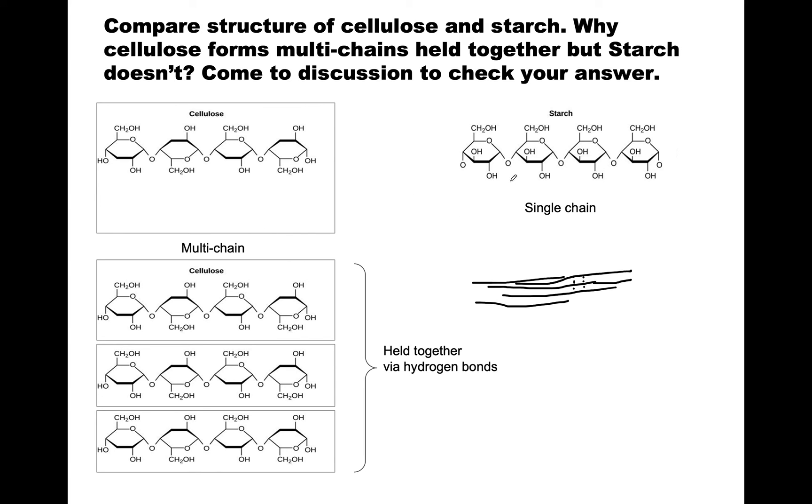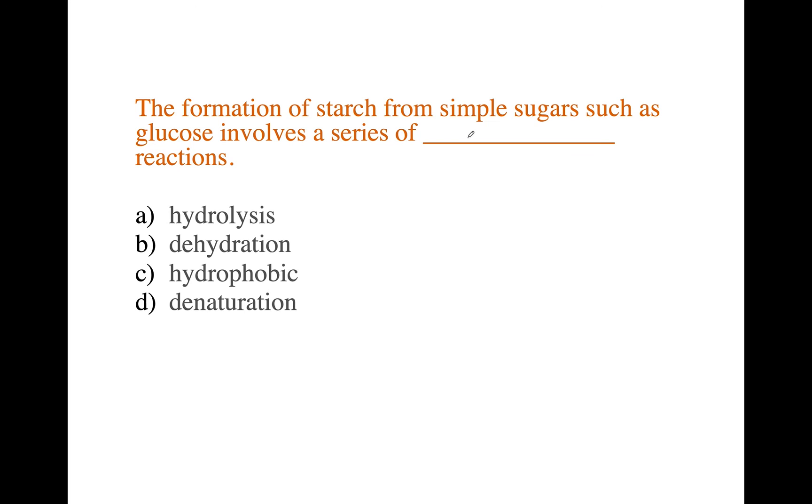So I would like you to compare the structures of cellulose and starch. Other than the fact that cellulose is a multi-chain, what is it about these two polysaccharides that makes one able to make lots of hydrogen bonds? And for this one, this doesn't happen. And come to discussion and let's see what answer you come up with. And here's another quiz that you can try and come and see if you got it right.